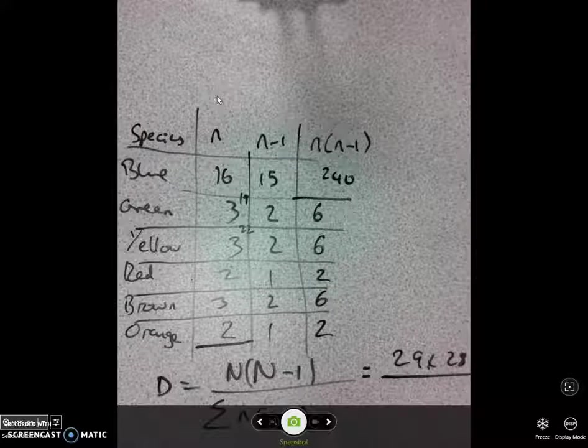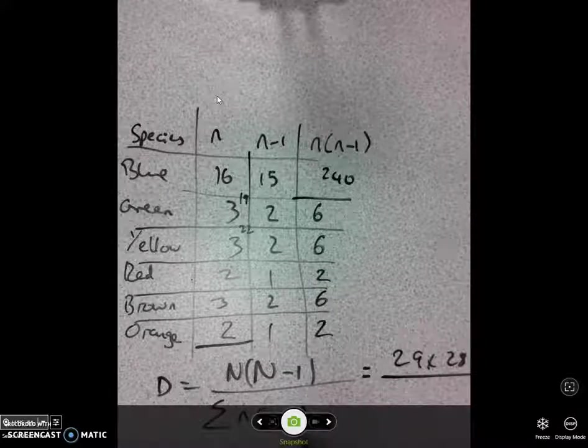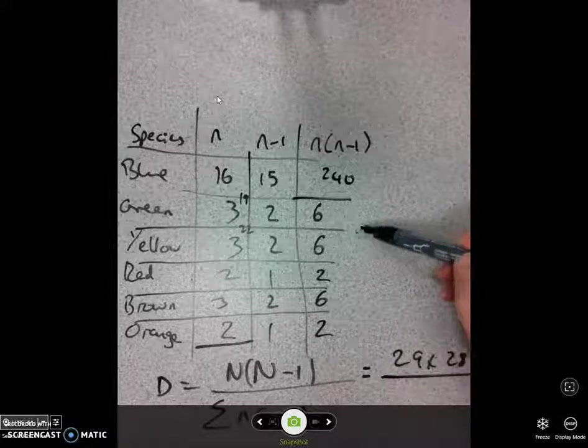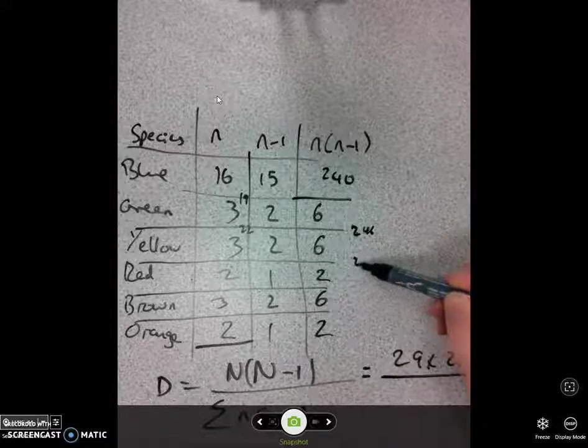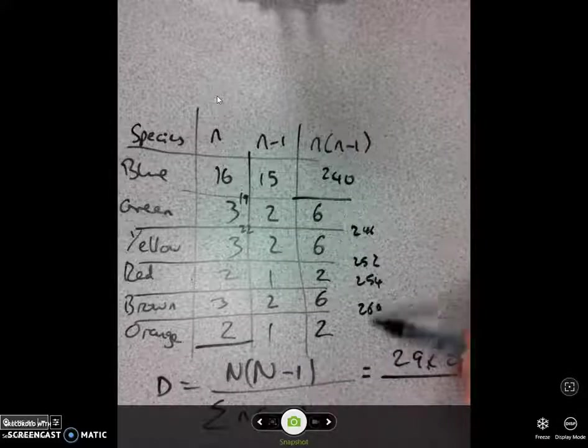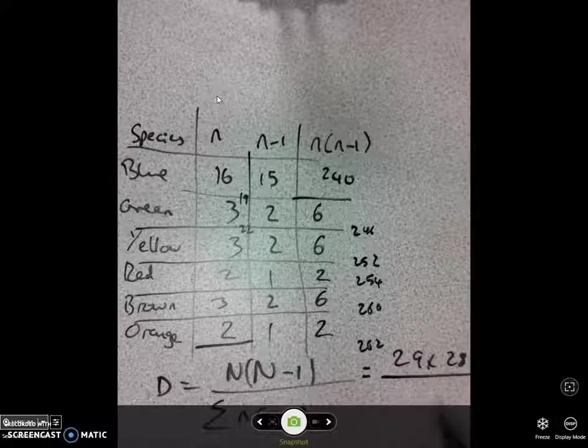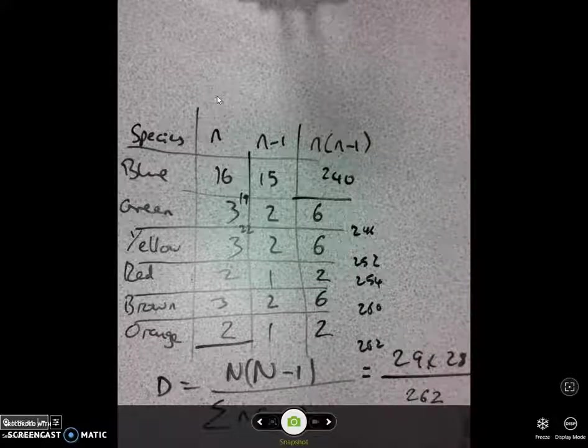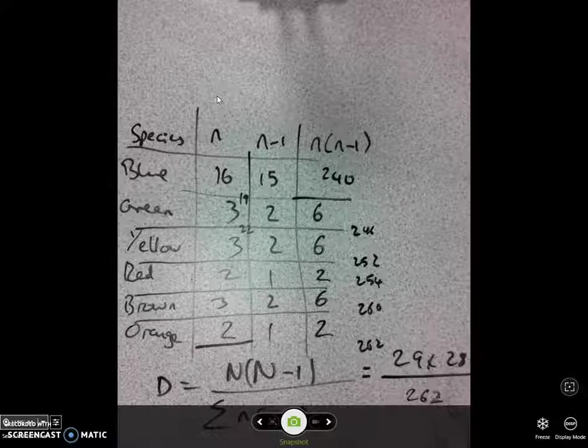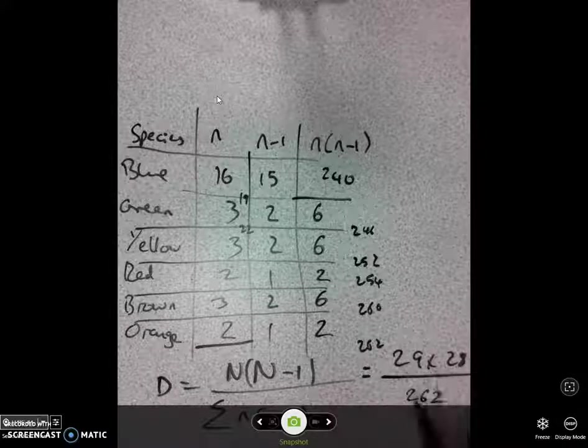Alright, underneath there, let's do the maths. I now have to do the sum of n, n minus 1. I need to add all of these together. So 246, 252, 254, 260, 262. Okay, so let's find out what it equals overall, the total value. I'm going to do 29 times 28 over 262.